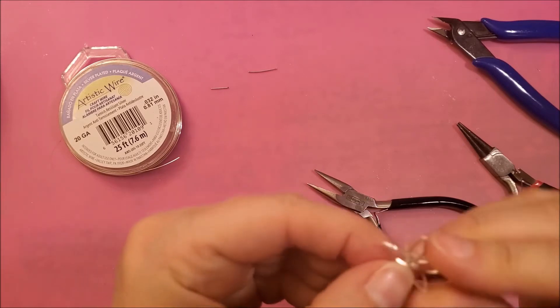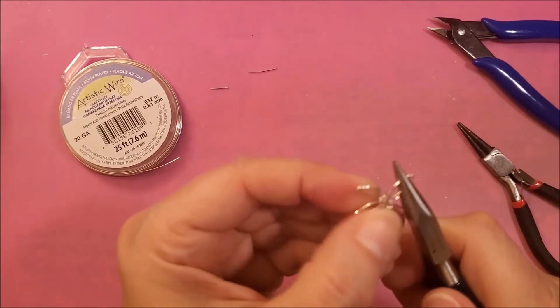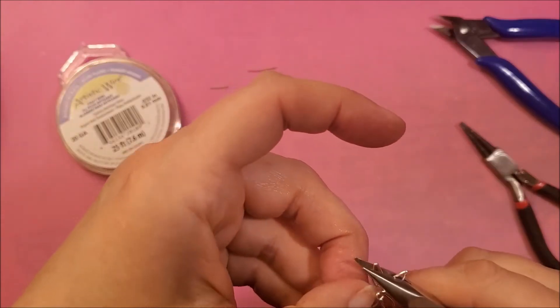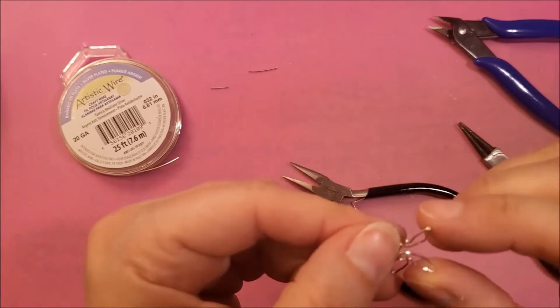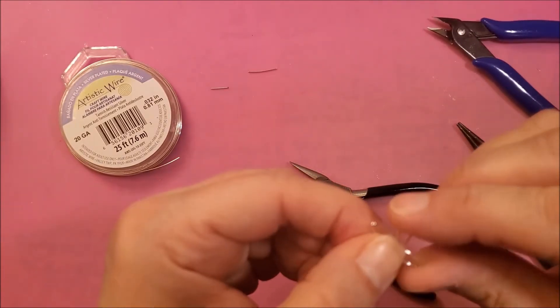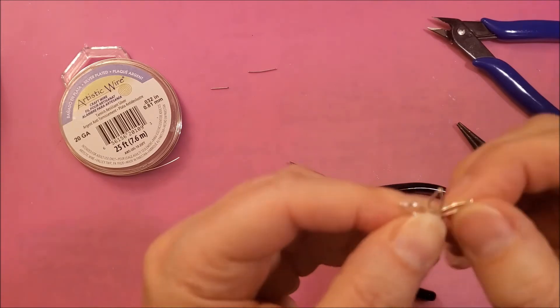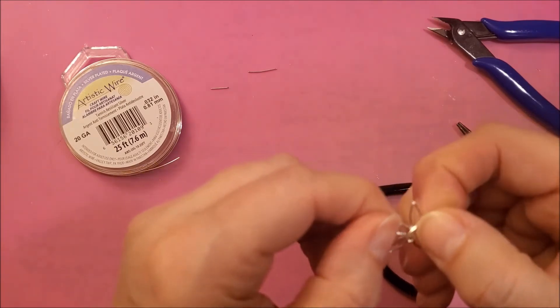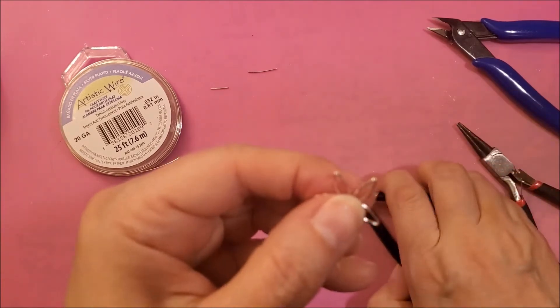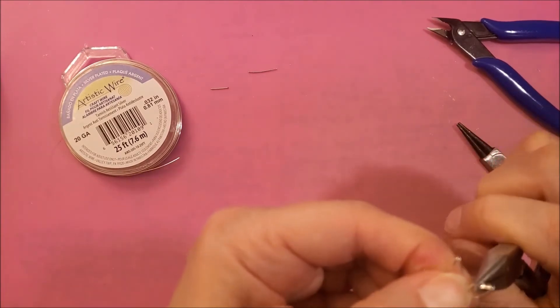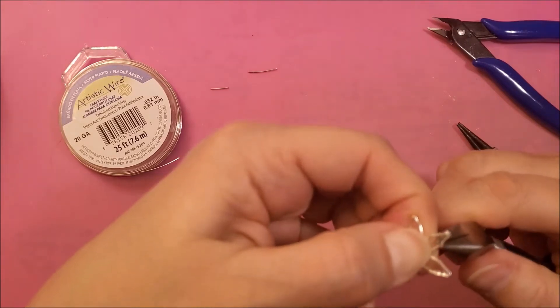Then with the round nose pliers go back in and make the little circle and that should end towards the center of the flower. Then you go with the other side and turn it in. See that one's still a little bit too big so we'll just clip a little bit off.